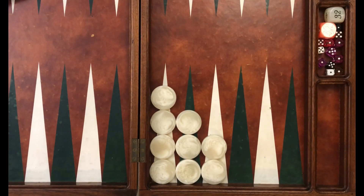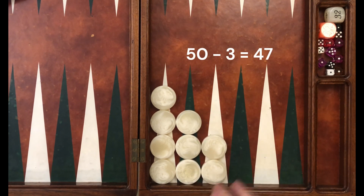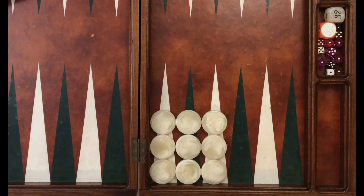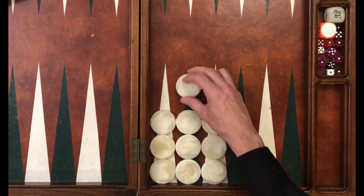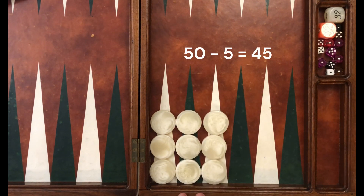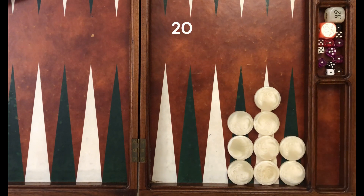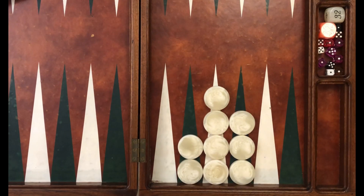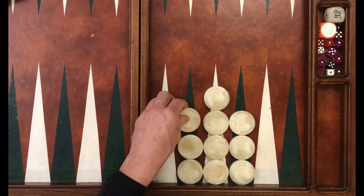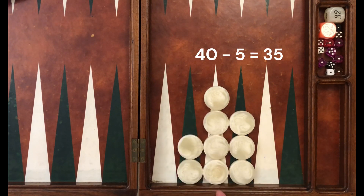Next example: here's our known formation, our missing checker — 50, missing 5 is 45. Next example: here's our known formation and our missing checker — 50, missing 5 is 45. Next example: here's our known formation and our missing checker — 20, missing 1 is 19. Our last example: here's our known formation, here's our missing checker — 40, missing 5 is 35.